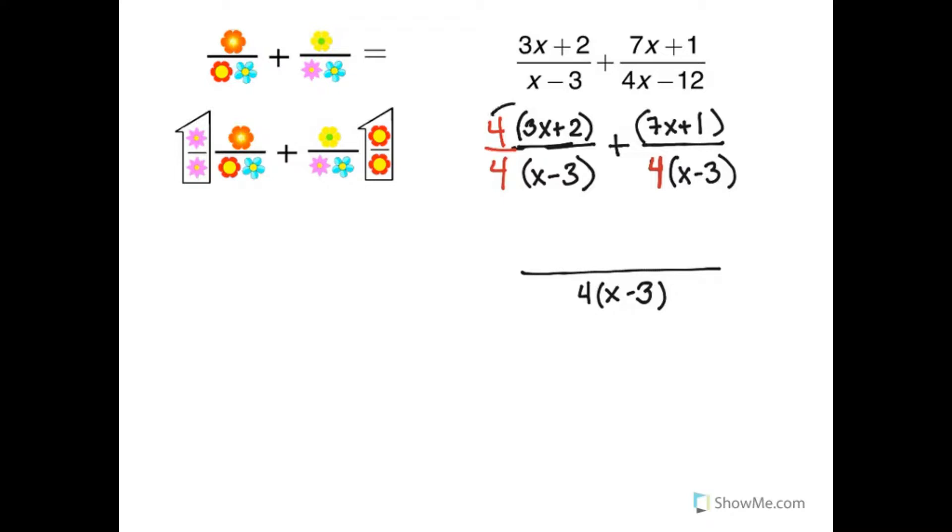On top I have to simplify, so I'm multiplying 4 with the distributive property. 4 times 3x is 12x, and 4 times 2 is 8.